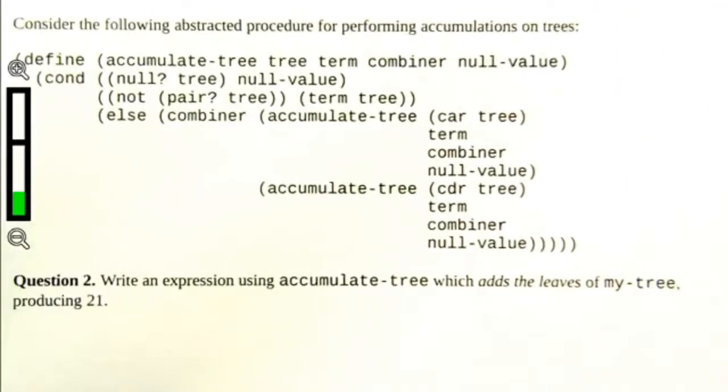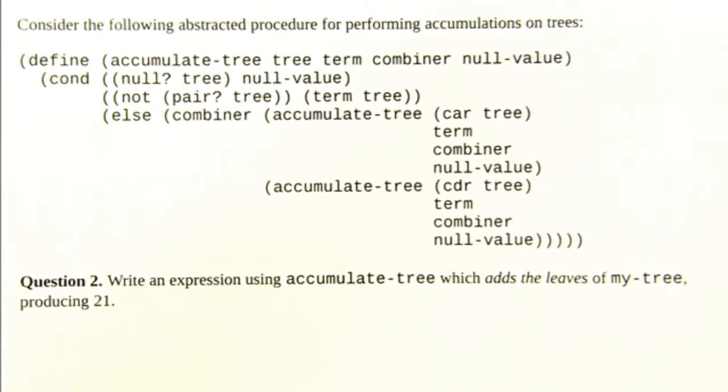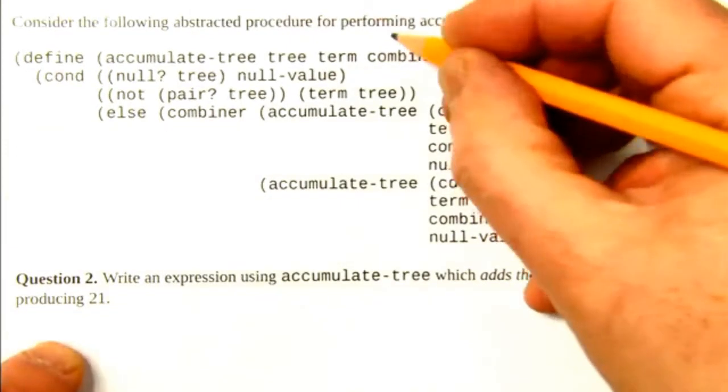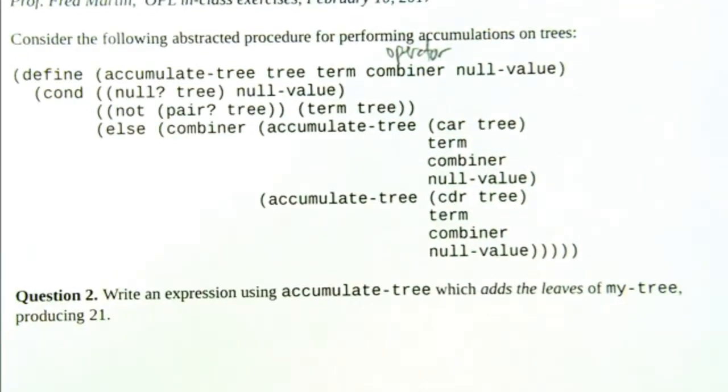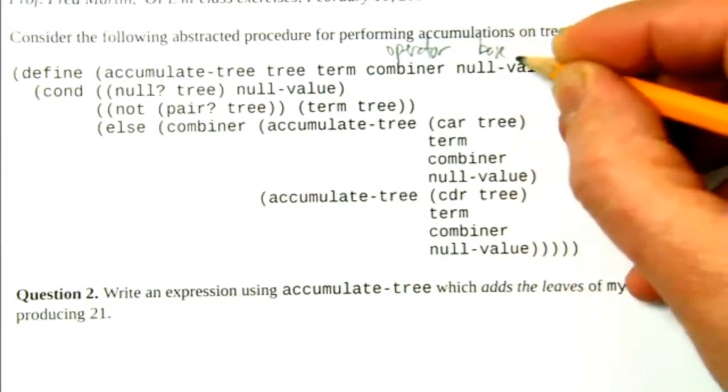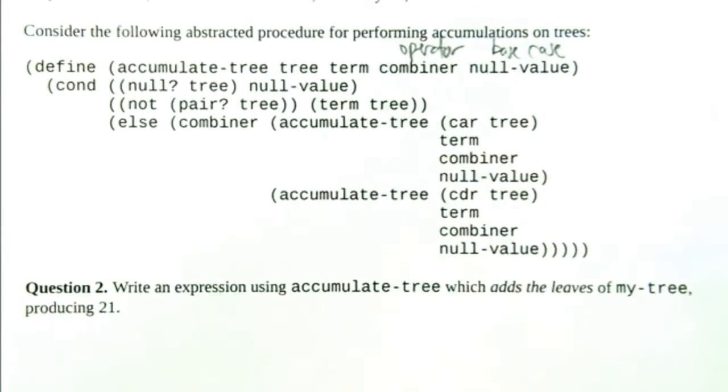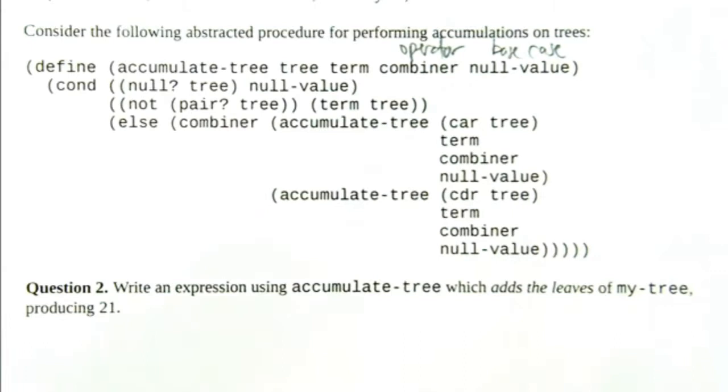So it looks like instead of opt, we called it combiner, but it's the same thing. That's the same as opt. That's the operator. The base case, we called null value. And then the term transforming function, we did call term. So that one is the same.